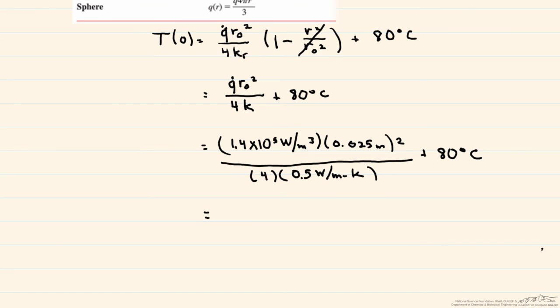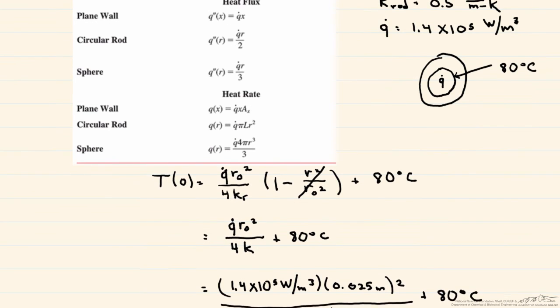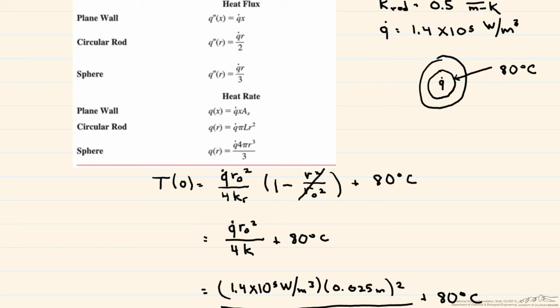One thing that you should always check, and you can go back and look at all the different screencasts on this particular rod, is do the temperatures make sense? So your T at zero should be your highest temperature, and then those temperatures should start to drop.